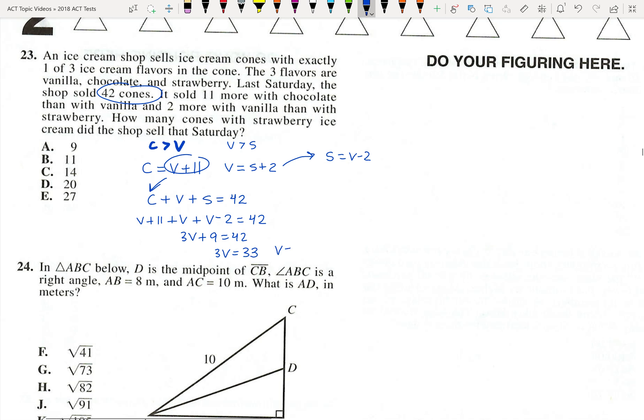And then V equals 11. Of course they asked how much strawberry ice cream did the shop sell. And we know that V equals S plus 2. So 11 equals S plus 2. S would equal 9. And that's answer choice A.